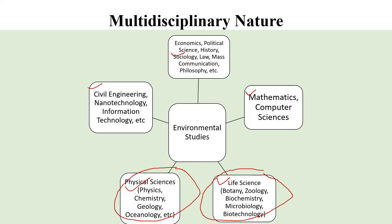And with the help of engineering and technological advancements, we can better design devices — for example, an air pollution control device — and many such devices that help us in controlling pollution levels or managing the loss of biodiversity.